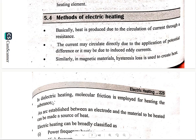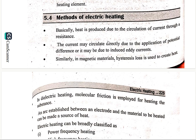We have methods of electric heating. It is basically produced due to circulation of current through resistance. The current may be directly due to the application of potential difference, or may be due to induced eddy currents. Similarly, magnetic material systems are used to create it. In electric heating, molecular friction is employed for heating the surface, and an arc established between an electrode and the material to be heated can be made a source of heat.